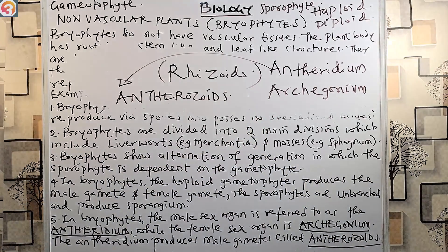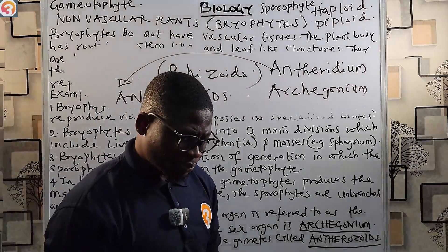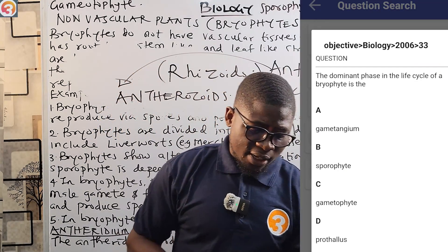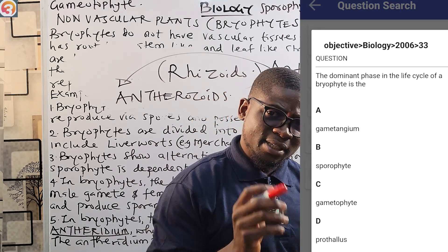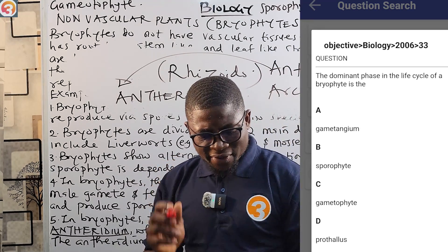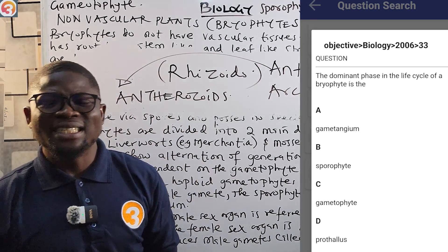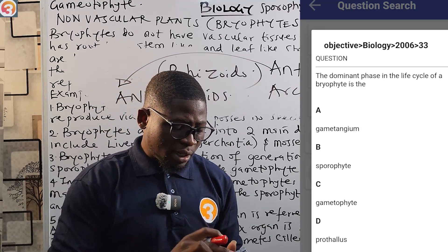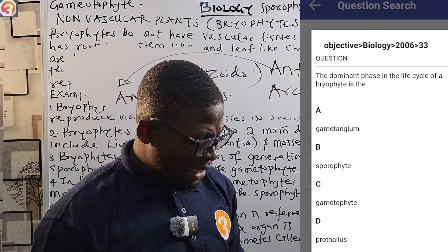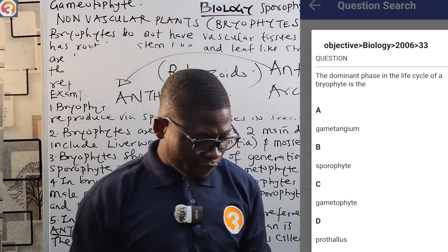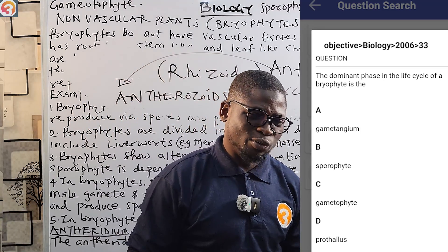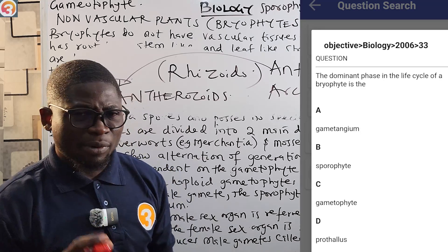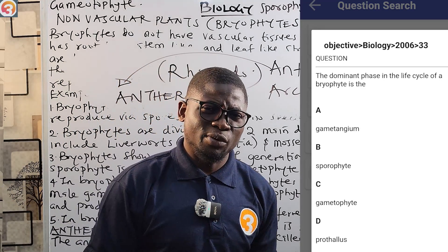Let's jump to the O3 Schools Jam app and take some questions. We have a 2006 question, number 33. It says: the dominant phase in the life cycle of a bryophyte is — option A: gametangium, B: sporophyte, C: gametophyte, D: prothallus. The correct answer is the gametophyte. The gametophyte is the main plant body — it is the more dominant phase in the life cycle of a bryophyte, and it produces the male and female gametes.